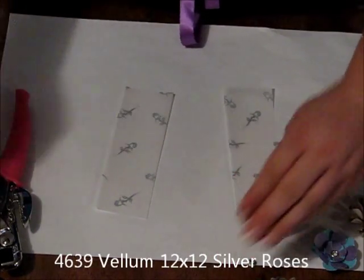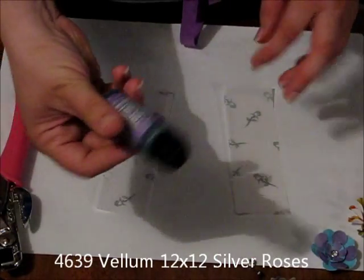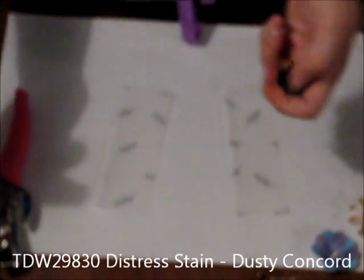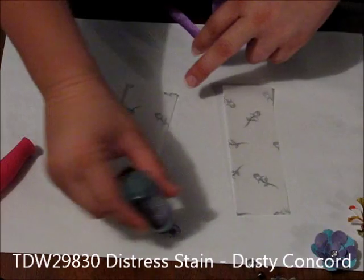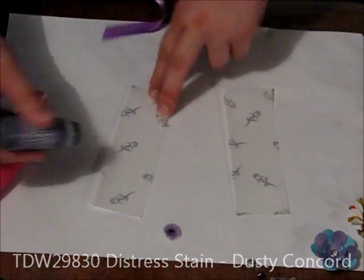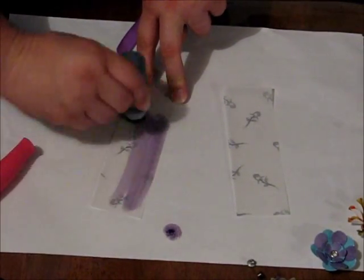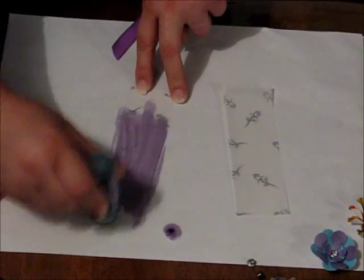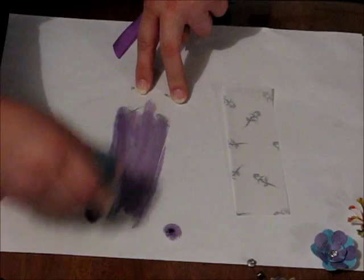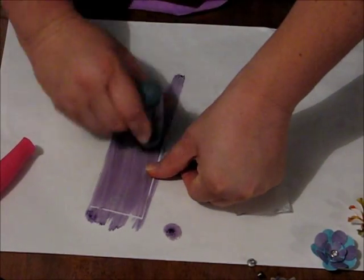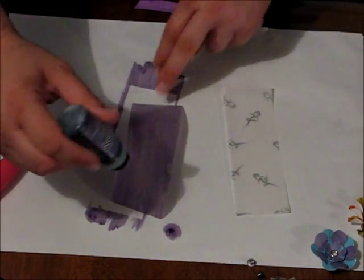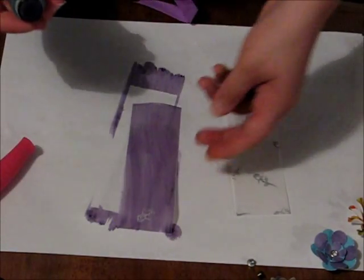So I've got a couple of pieces of my vellum. And I'm just going to grab my Dusty Concord Distress Stain. Now with these, the best way to get them working is to just push down until they start to flow and then rubbing over. Now these vellums that I've got here, they actually have little silver roses on them. So when you rub over with your Distress Stain, the silver roses actually stay silver. And it gives it that really nice effect.